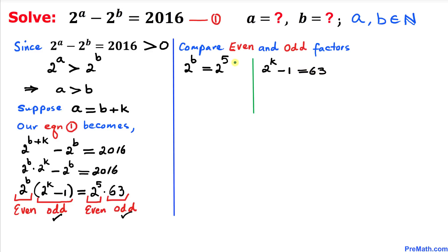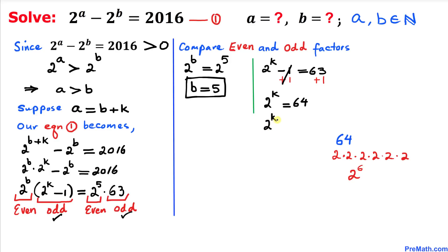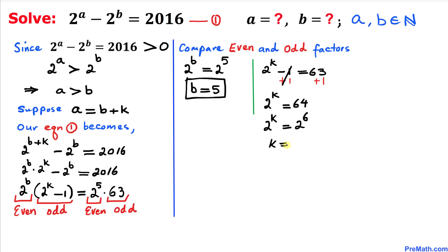Since the bases are the same, we equate exponents and get b equals 5. For the odd equation, adding 1 to both sides gives 2^k equals 64. Since 64 equals 2 times 2 times 2 times 2 times 2 times 2, that is 2^6, we can write 2^k equals 2^6, so k equals 6.